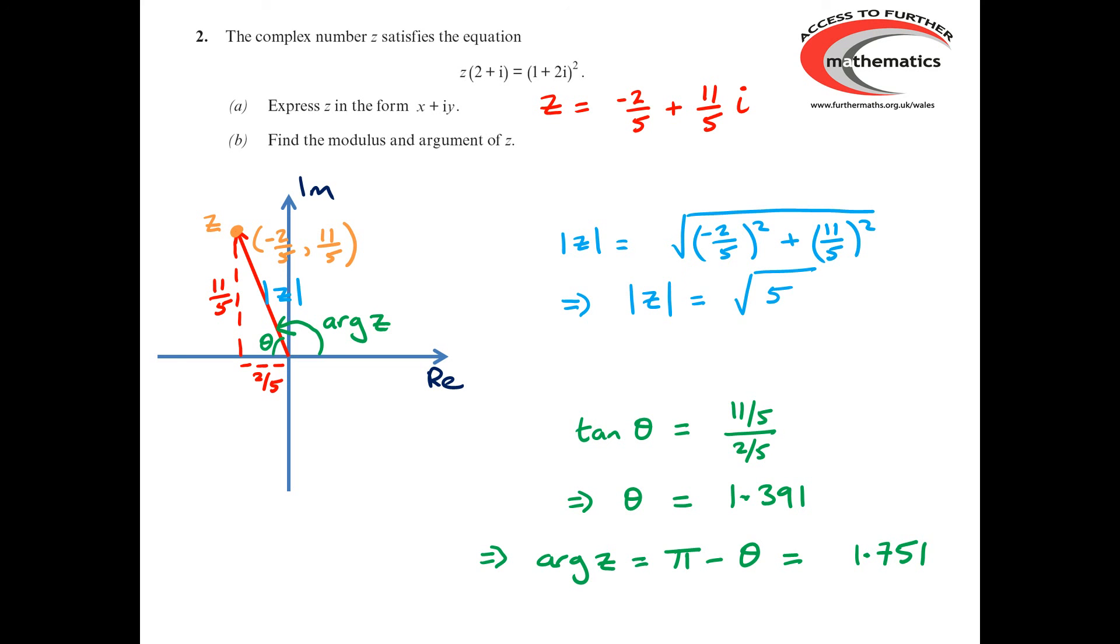Now, let's just pause for a moment and have a look at the mark structure for this question. For part A, there were two marks for correctly working out (1 + 2i)². There was then a method mark for dividing by 2 + i, followed up by three answer marks for actually executing the division correctly.